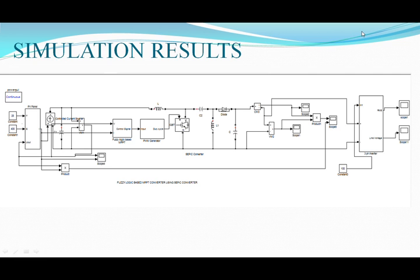This is the PV panel. We designed it using equations, applying those equations and giving the result to a mux to take the output. The temperature reference is 25°C and the irradiance is set to 1000 W/m². Our PV panel output is approximately 80 volts, and from the scope, the line voltage is approximately 120 volts. The fuzzy logic controller takes V and I from the input side, and these are given to the fuzzy controller. In the fuzzy controller, we run a program as described earlier by our teammates.